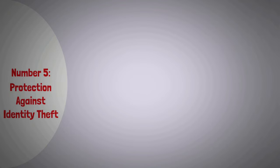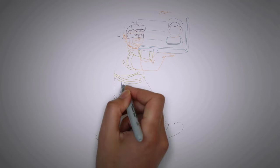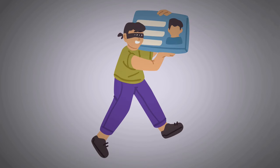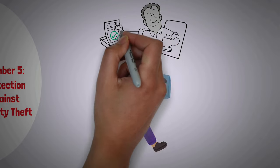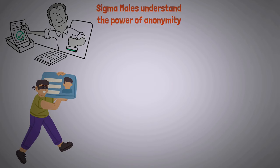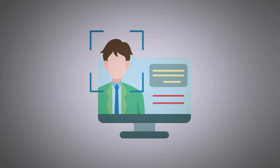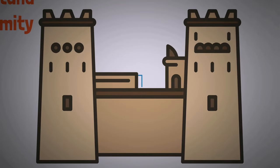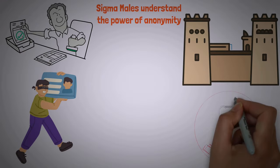Number 5: Protection Against Identity Theft. In this fastly developing digital world, identity theft is very common. Hackers on the internet are always looking for chances to steal your identity when you share too much personal information. But Sigma males understand the power of anonymity. They're building an unbreakable fortress around their identity by keeping a low profile and operating in the shadows. They're not broadcasting their every move on social media or oversharing sensitive details online.